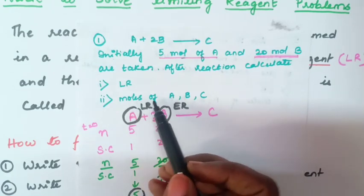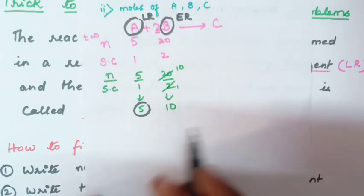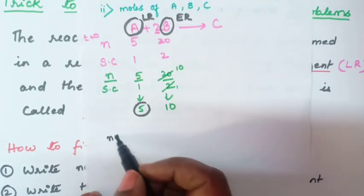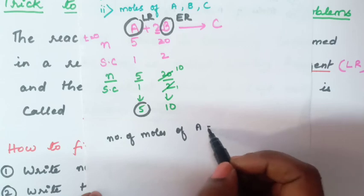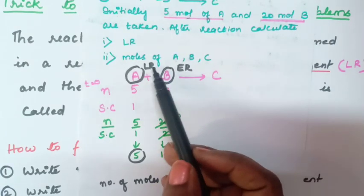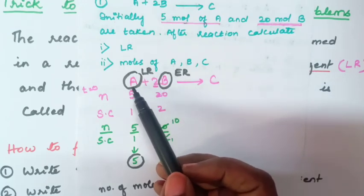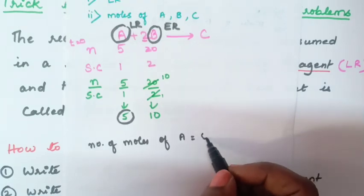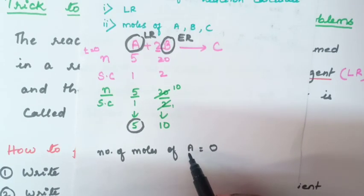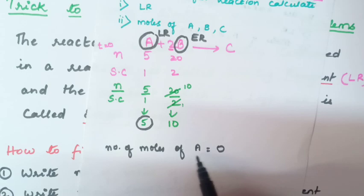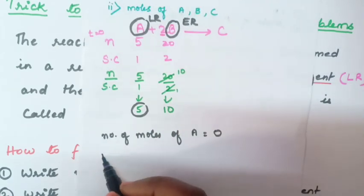Now let us find the number of moles of A, B, and C. Number of moles of A: since A is the limiting reagent, it will be completely consumed during the reaction. So at the end of the reaction, the number of moles of A will be 0, because it is completely converted into product.